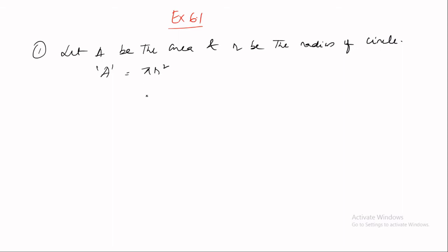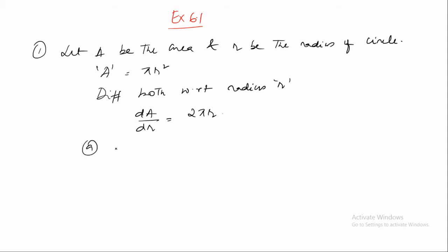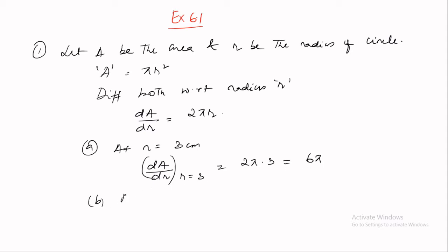Differentiating both sides with respect to radius r, we get dA/dr = 2πr. For part (a), at r = 3 cm: dA/dr = 2π × 3 = 6π. For part (b), at r = 4 cm: dA/dr = 2π × 4 = 8π. Both values represent the rate of change of area of the circle with respect to its radius.